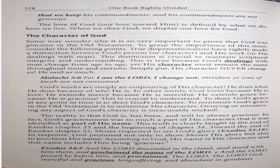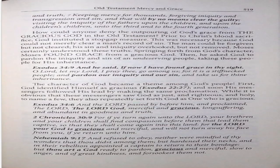Exodus 34:5-6. And the Lord descended in the cloud and stood with him there and proclaimed the name of the Lord. And the Lord passed by before him and proclaimed, The Lord, the Lord God, merciful and gracious, long-suffering and abundant in goodness and truth, keeping mercy for thousands, forgiving iniquity and transgression and sin, and that will by no means clear the guilty, visiting the iniquity of the fathers upon the children, upon the children's children, unto the third and to the fourth generation. How could anyone deny the outpouring of God's grace from the gracious God in the Old Testament?